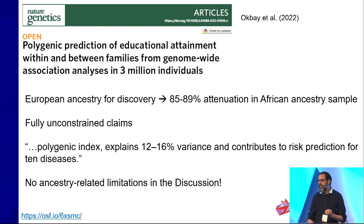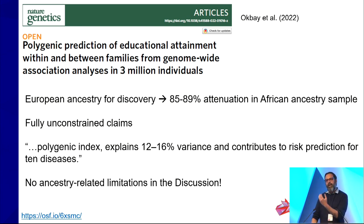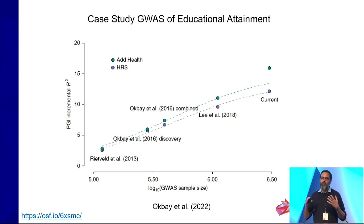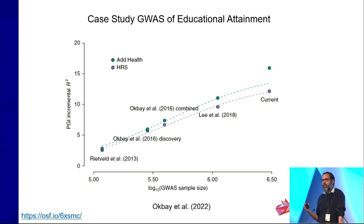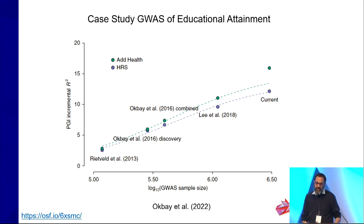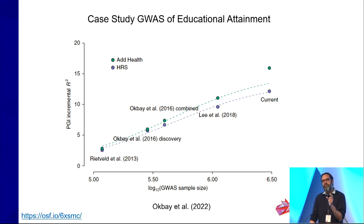What we see here is widely known and acknowledged within genetics researchers — this is seen as a lack of generalizability, a known problem. However, given that they're making universal claims, the fact that we don't see the same predictive power in a different ancestry group suggests that's actually a lack of replication — because the claim is a universal one, and that's what should be evaluated.